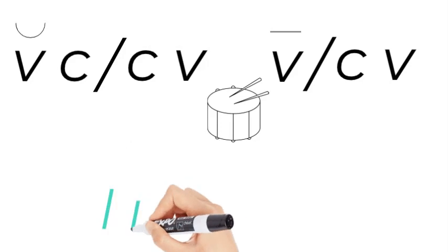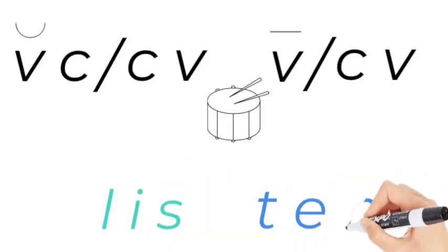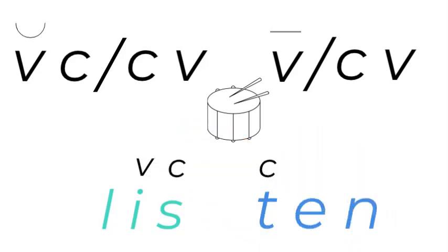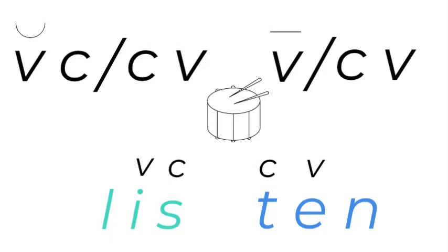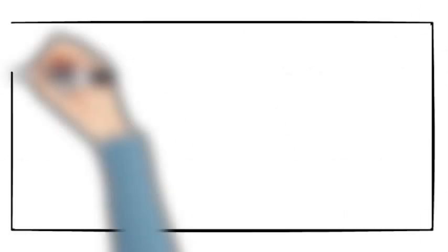So let's look at the word listen and let's be a detective and see which one we can find. Okay. So let's do the vowel, consonant, consonant, vowel. And we break it between the consonants, and then we can say list 10. It's actually listen, but list 10.